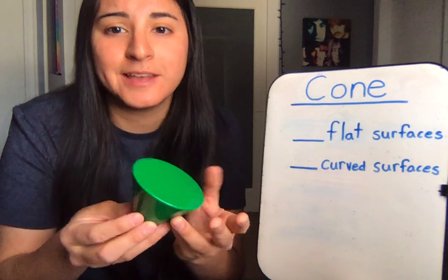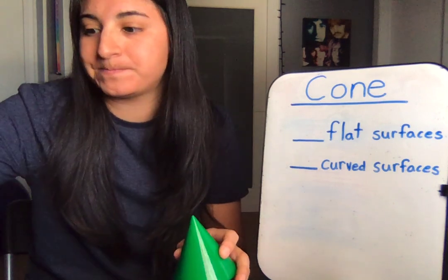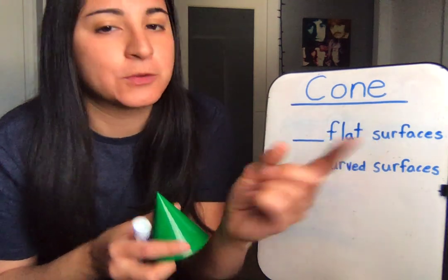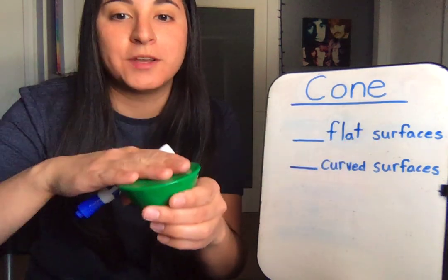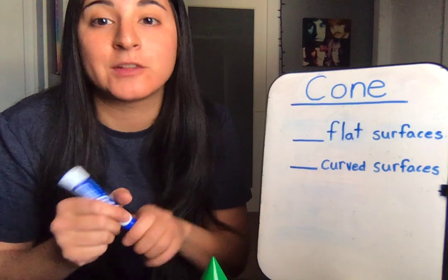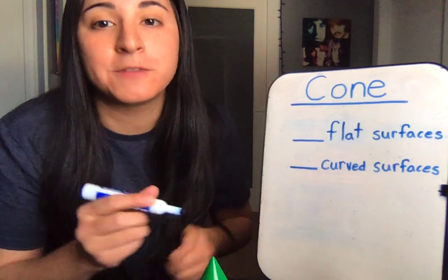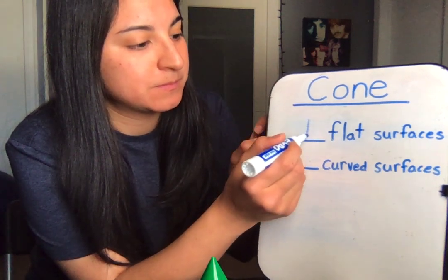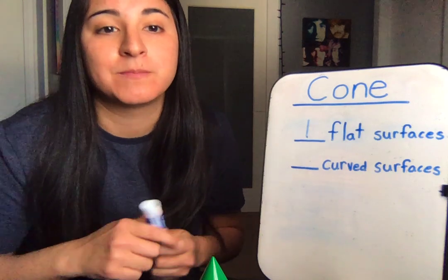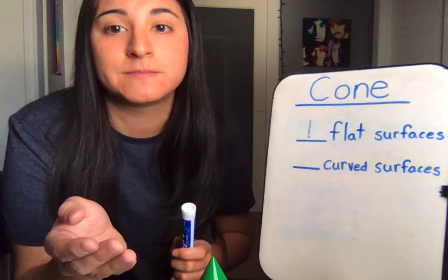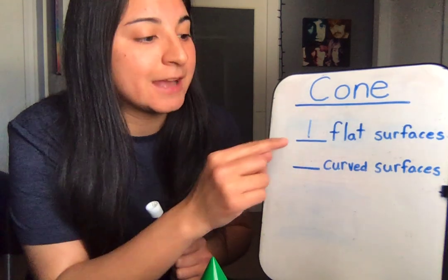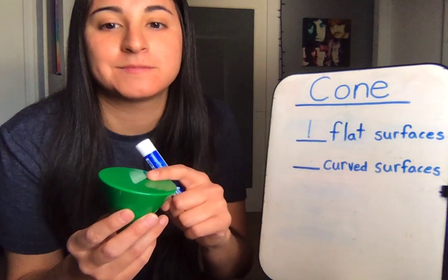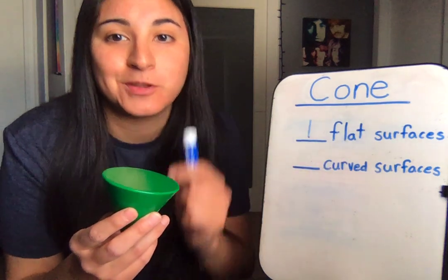Let's count the surfaces. Let's count the flat surfaces. One. A cone has one flat surface. Say it with me: a cone has one flat surface. Great job!